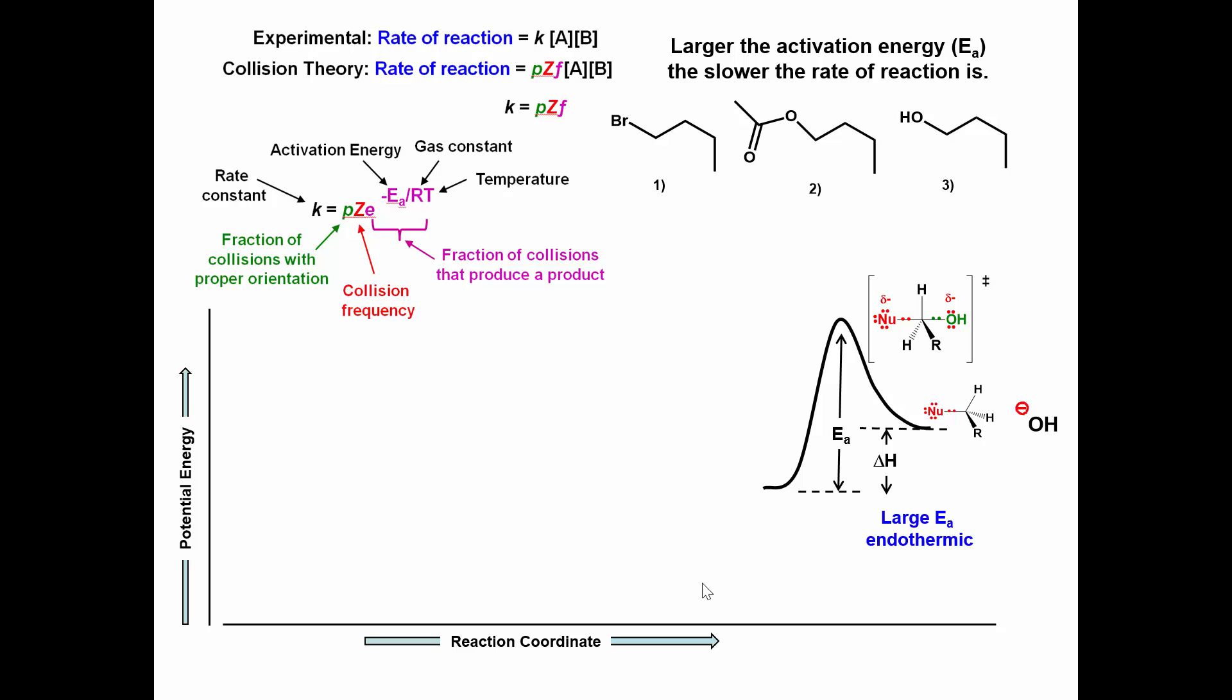Thus in the third reaction the hydroxide ion is the leaving group. In the transition state the hydroxide ion is gaining the negative charge, which is a strong base and is not stable. This reaction will most likely be endothermic.